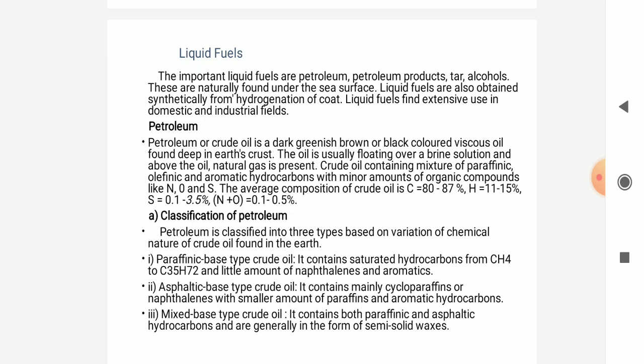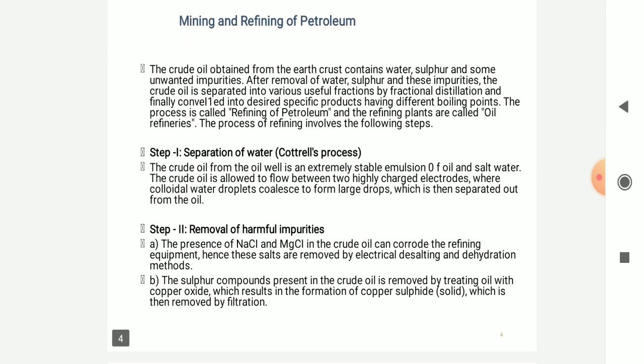The mixed-base crude oil contains paraffins and asphaltic hydrocarbons, which are generally in the form of semi-solid wax. The crude oil obtained from the earth's crust contains water, sulfur, and unwanted impurities. After removal of water, sulfur, and these impurities, the crude oil is then separated into various useful fractions by fractional distillation and finally collected into desired specific products having different boiling points. This process is called refining of petroleum, and is carried out in oil refineries.